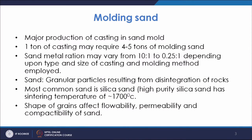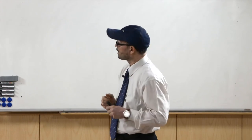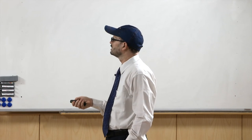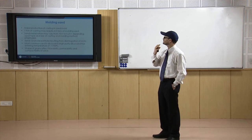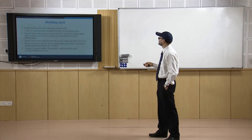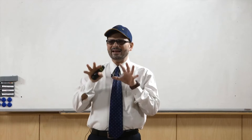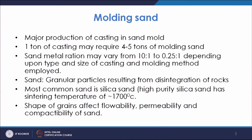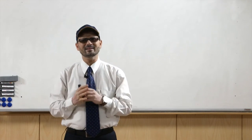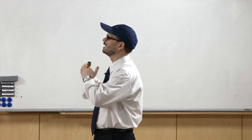The shape of grains affects flowability, permeability, and compactability of sand. The sand obtained by crushing of rocks has different shapes — shapes may be round, sub-angular, or angular. Flowability means its ability to flow and take the shape of the mold. Permeability is the property of the molding material or mold to allow gases generated during solidification to go out of the mold. Compactability is its ability to be compacted so that it gets enough strength to sustain the metallostatic pressure.